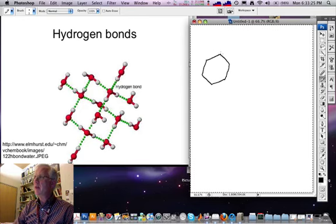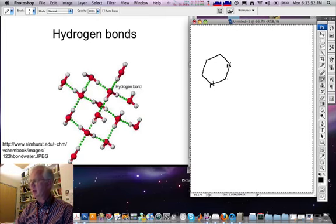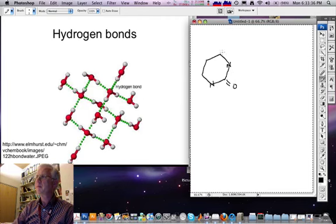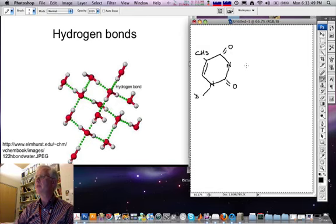Wherever I have a vertex, I am referring to a carbon, except for where I explicitly write in a nitrogen. This nitrogen attaches to the rest of the DNA. This is the base thymine.